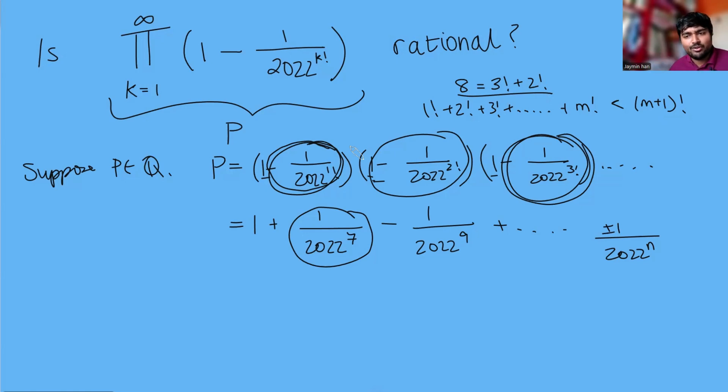We're going to assume then that every single term in this expansion is of this form. So we can write P in the form the sum from n equals 0 to infinity of epsilon n over 2022 to the n where each epsilon n is either minus 1, 0 or 1. Minus 1 and 1 coming from that case and why do I include 0 here? Well not every single value of n is possible.